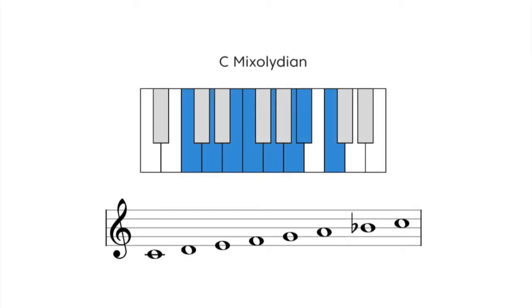To build a Mixolydian scale, all you need to do is take a major scale and lower the seventh note by one half step. Let's give it a listen.